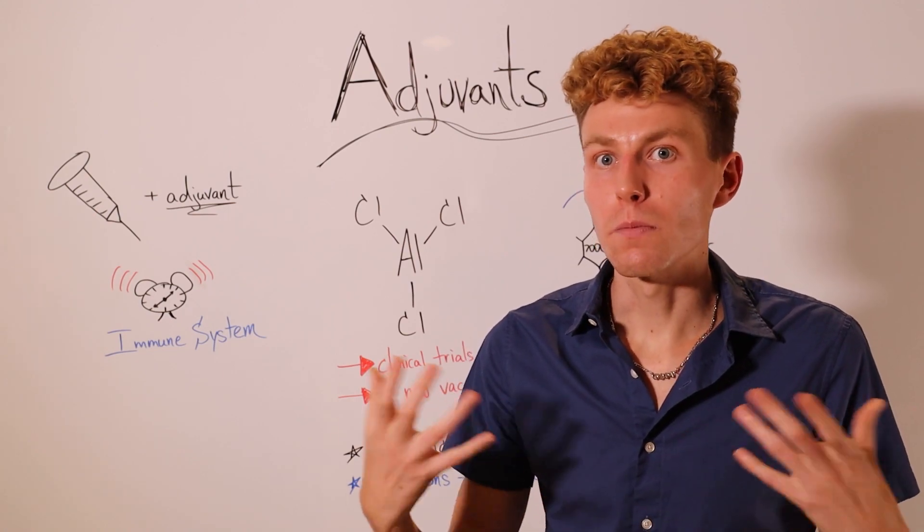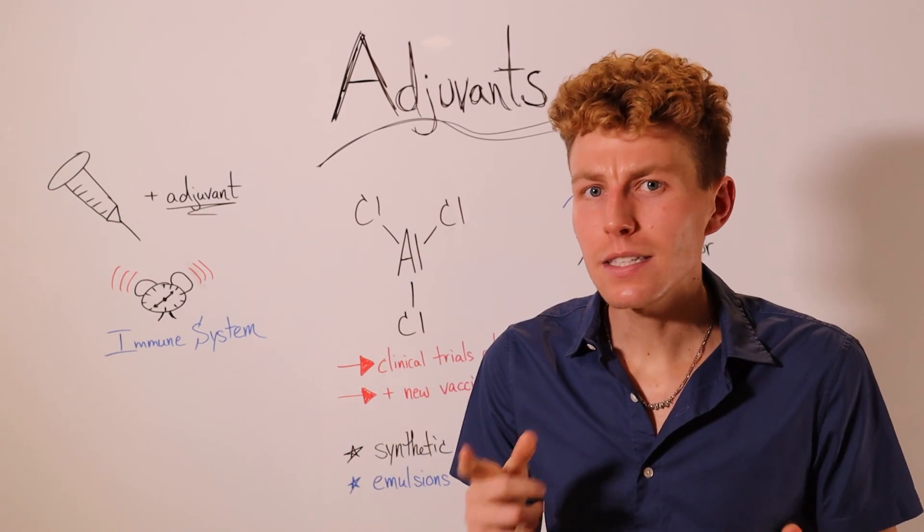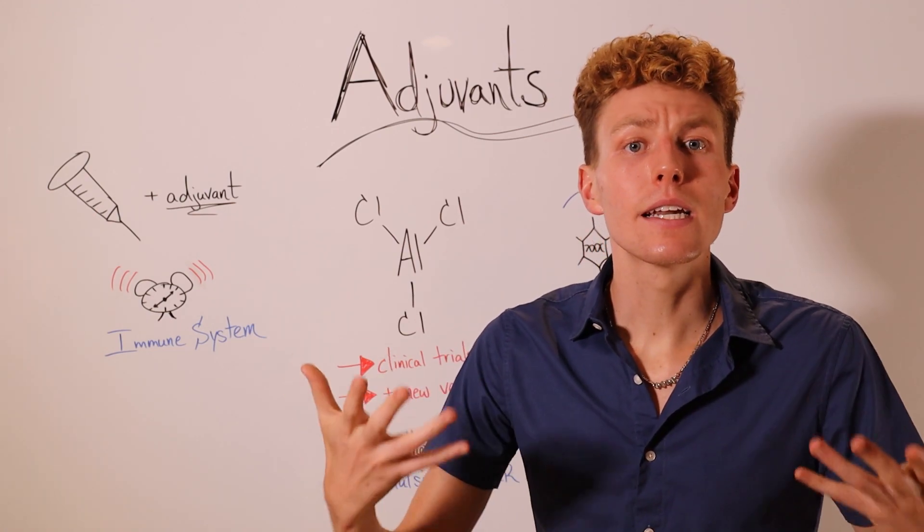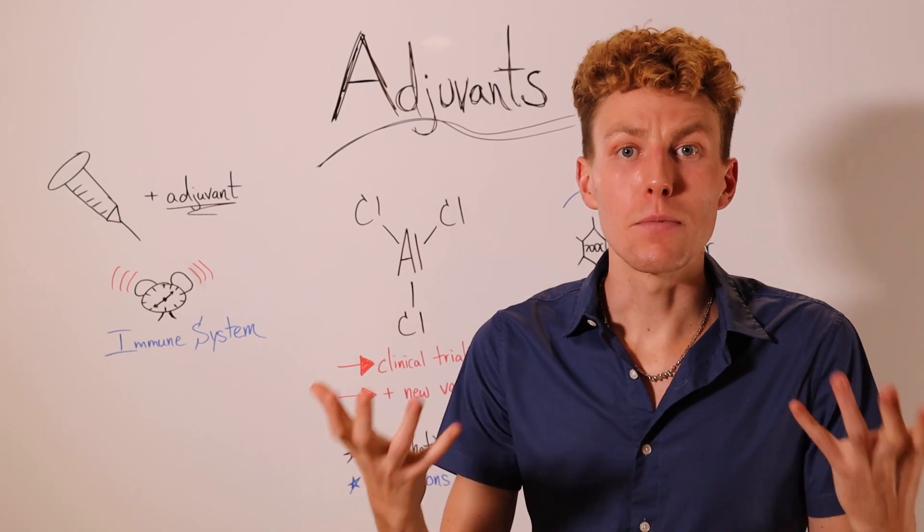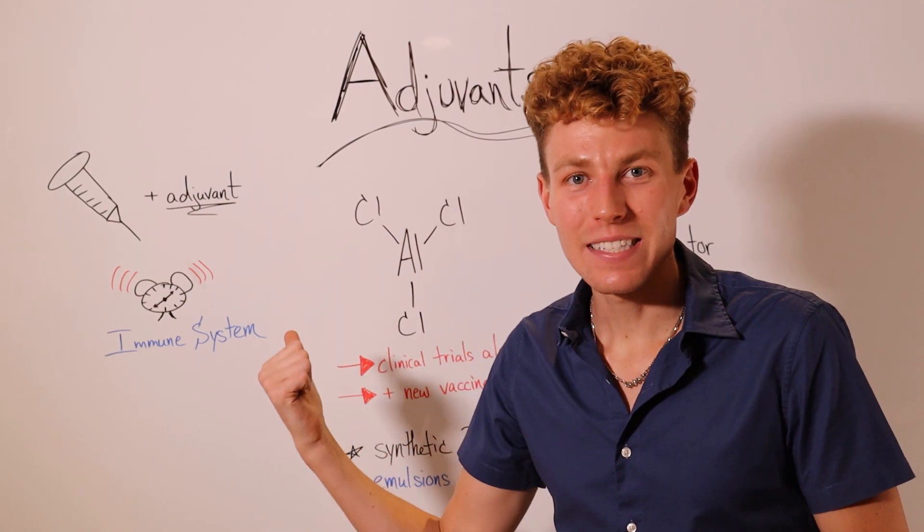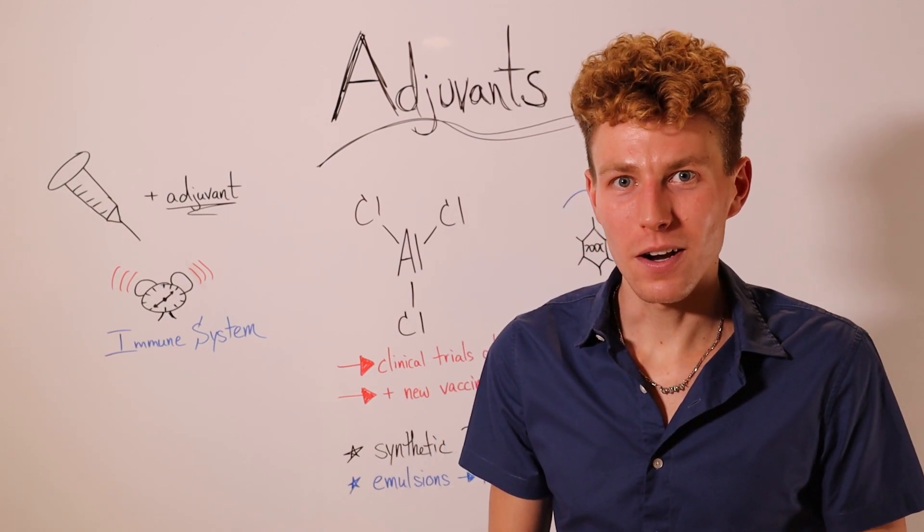So when it's in our bodies our immune cells say that's not supposed to be here, they begin eliciting an immune response but what they're actually eliciting the immune response against is that vaccine that is now present in our bodies.